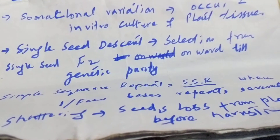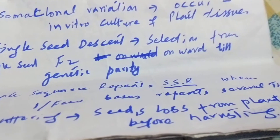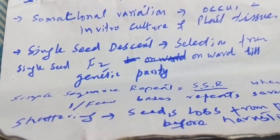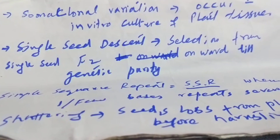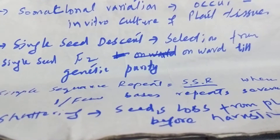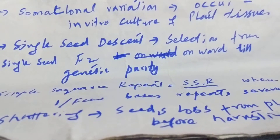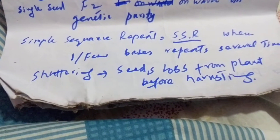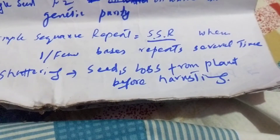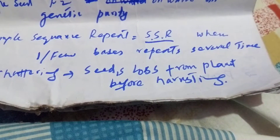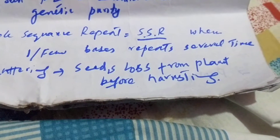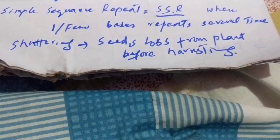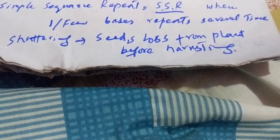Diploid body cells are somatic. Somaclonal variation occurs in vitro culture of plant tissues. Single seed descent method is the method of selection from a single seed from F2 onward until genetic purity is achieved. Single sequence repeat (SSR) is when one or few bases repeat several times.